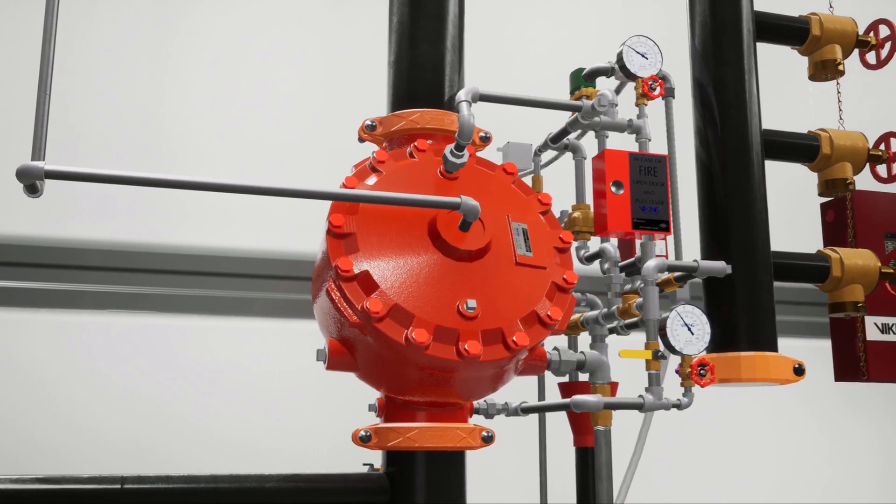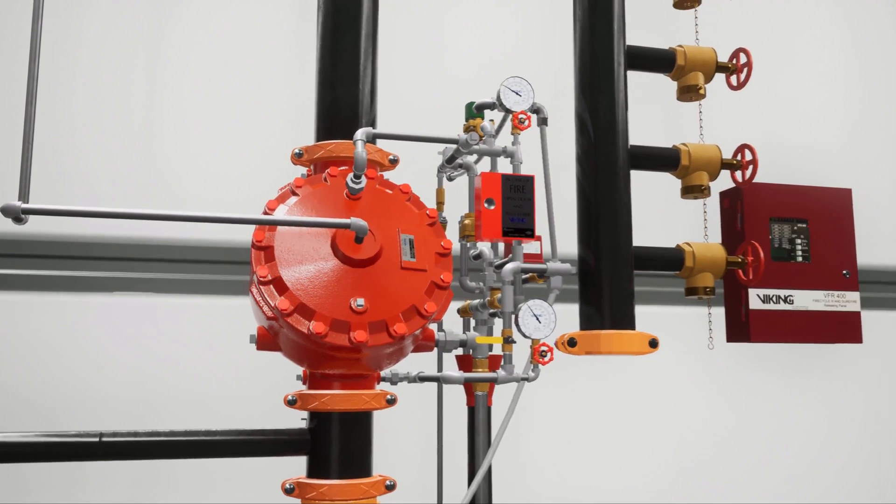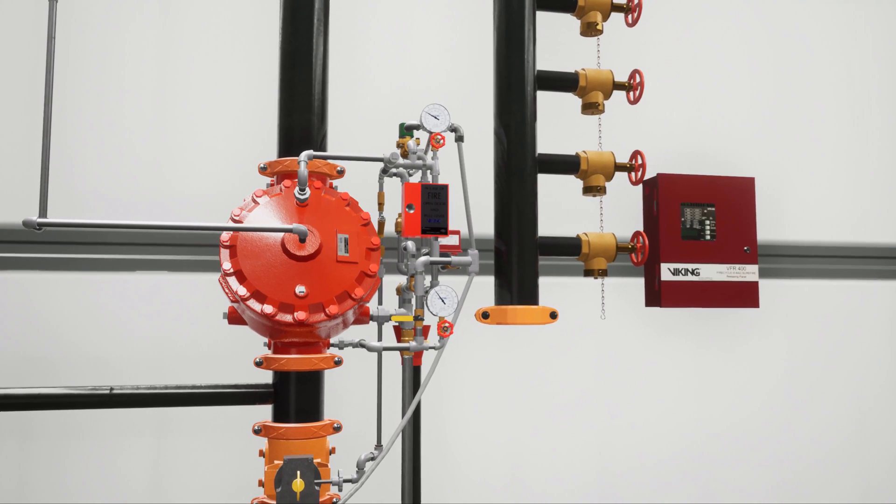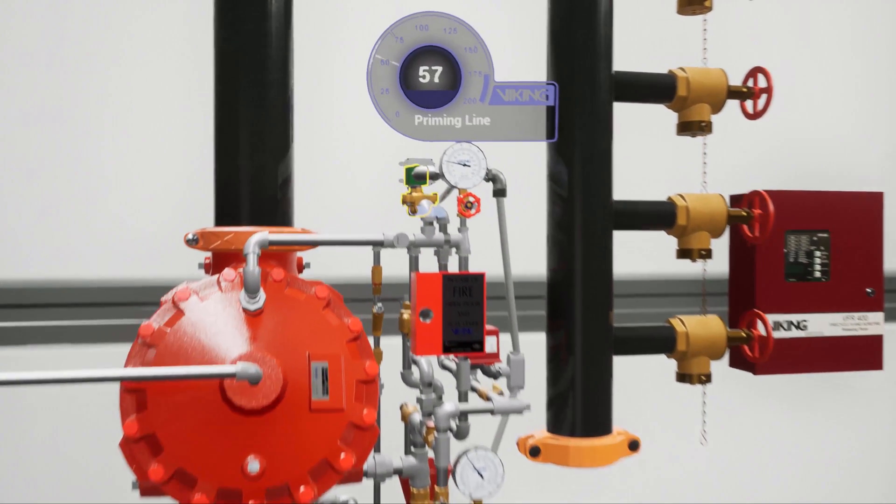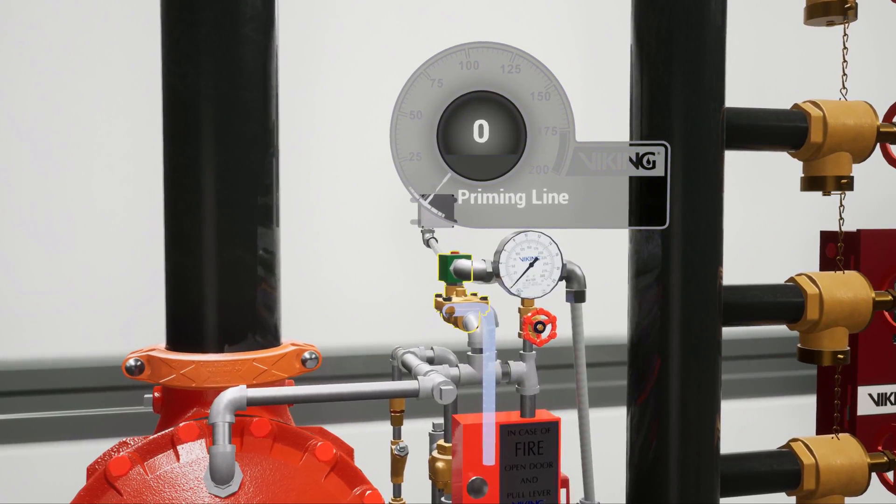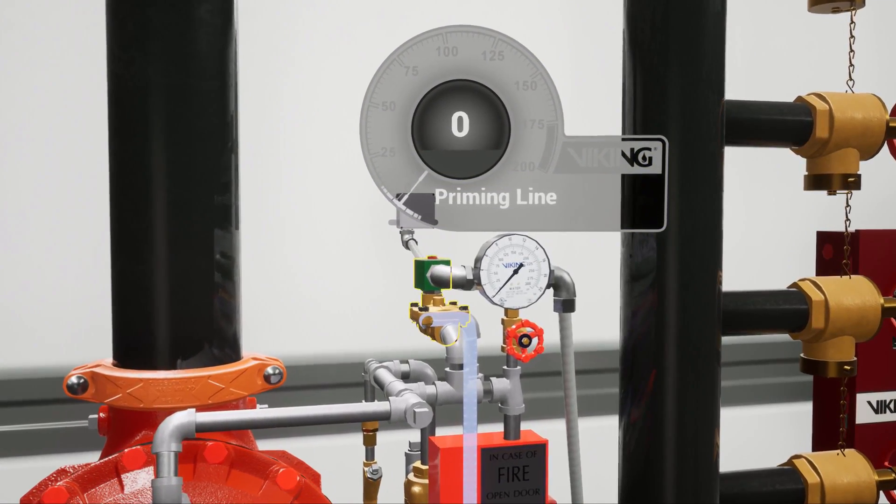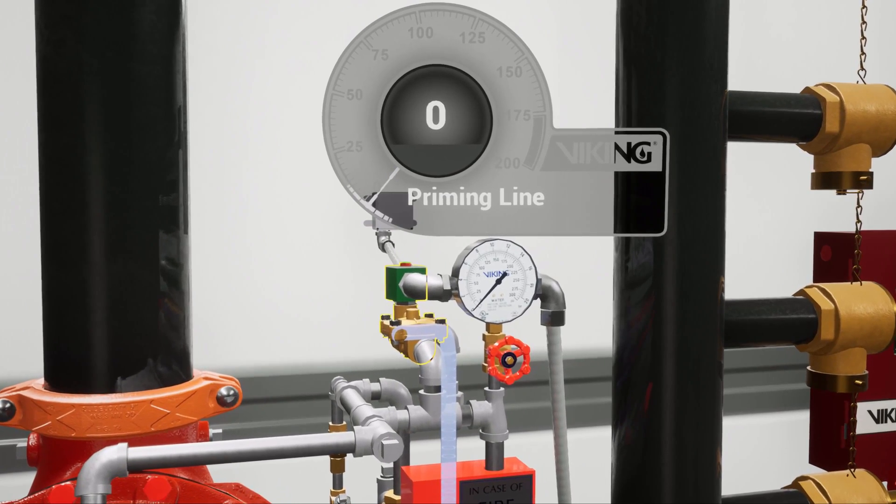In a scenario where a fire has started in the hangar and begins to grow, the electric detection device activates and sends a signal to the VFR 400 release control panel. The electric solenoid valve is powered open, releasing water pressure within the priming chambers of the deluge valve and the concentrate control valve.